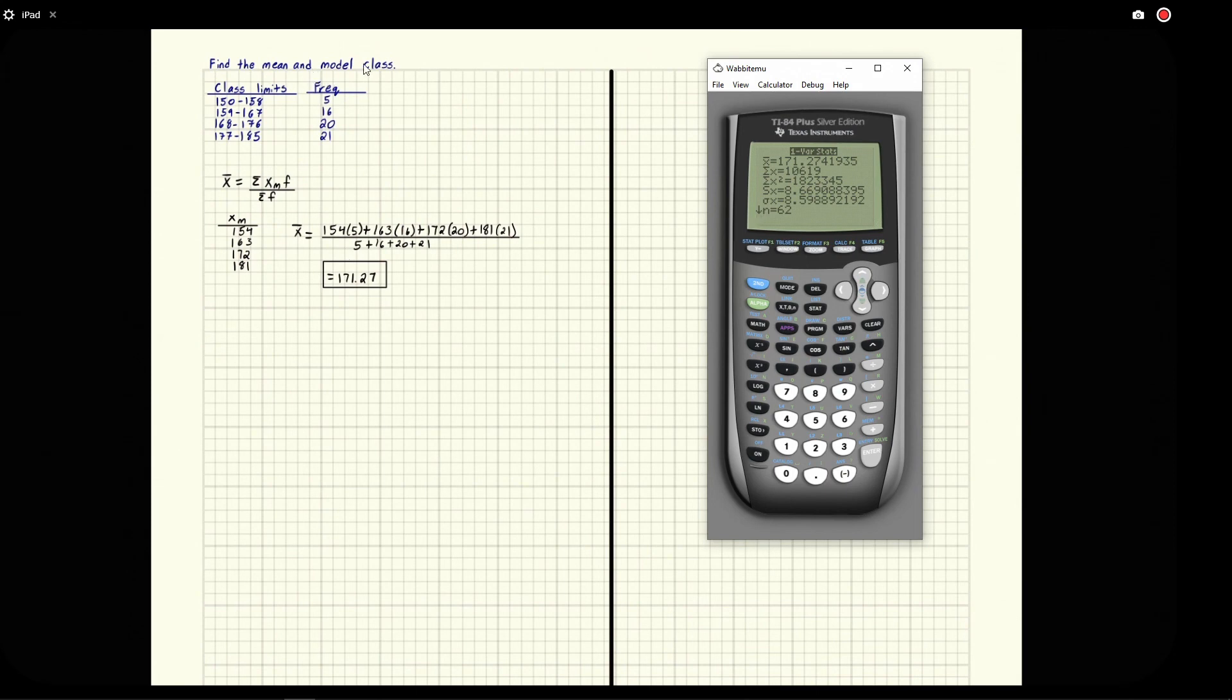So we need to find the modal class. So the modal class is just a class with the highest frequency. So in that case, this is the modal class. It's got the highest frequency, 21. It's the biggest one. Modal class. And that's all you got to do.